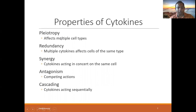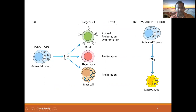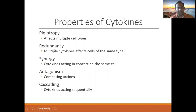About the properties of cytokines: they are pleiotropic, meaning they affect multiple cell types. For example, interleukin-4 acts on B cells, thymocytes, and mast cells.